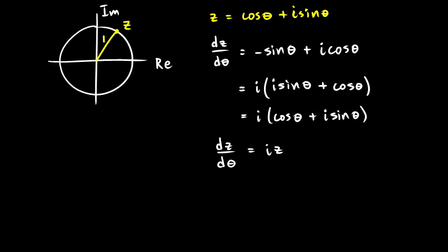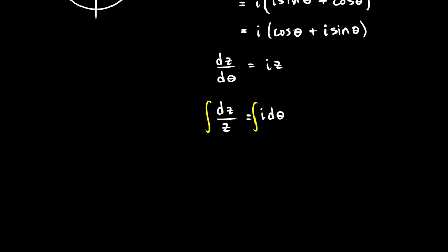Now let's rearrange this, separate the variables, get all the z's on one side. So we have dz over z equals i dθ. dz over z equals i dθ. And then integrate both sides. So we integrate the left and we integrate the right. When we integrate, just remember that i is a constant. Okay, over on the left, the integral of dz over z is just natural log of z. And the integral of i dθ is i theta. And then take e to the power of the left and e to the power of the right. And so e to the power of ln z is just z. And e to the power of i theta is e to the i theta. So z equals e to the i theta.